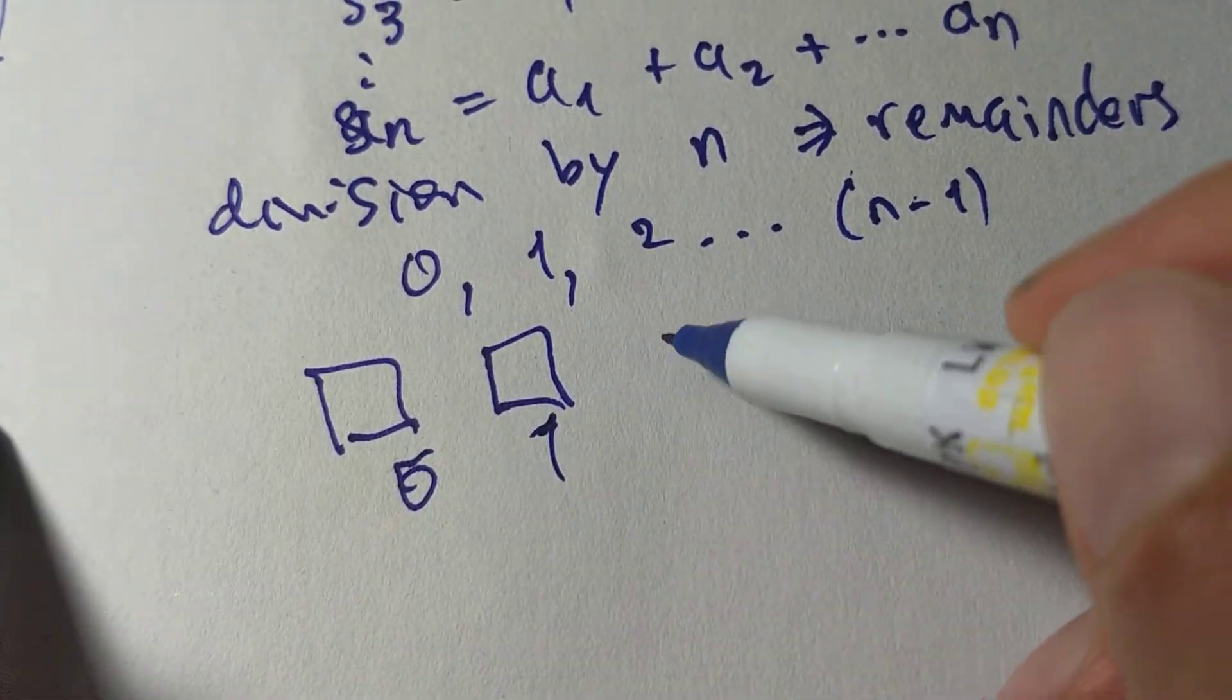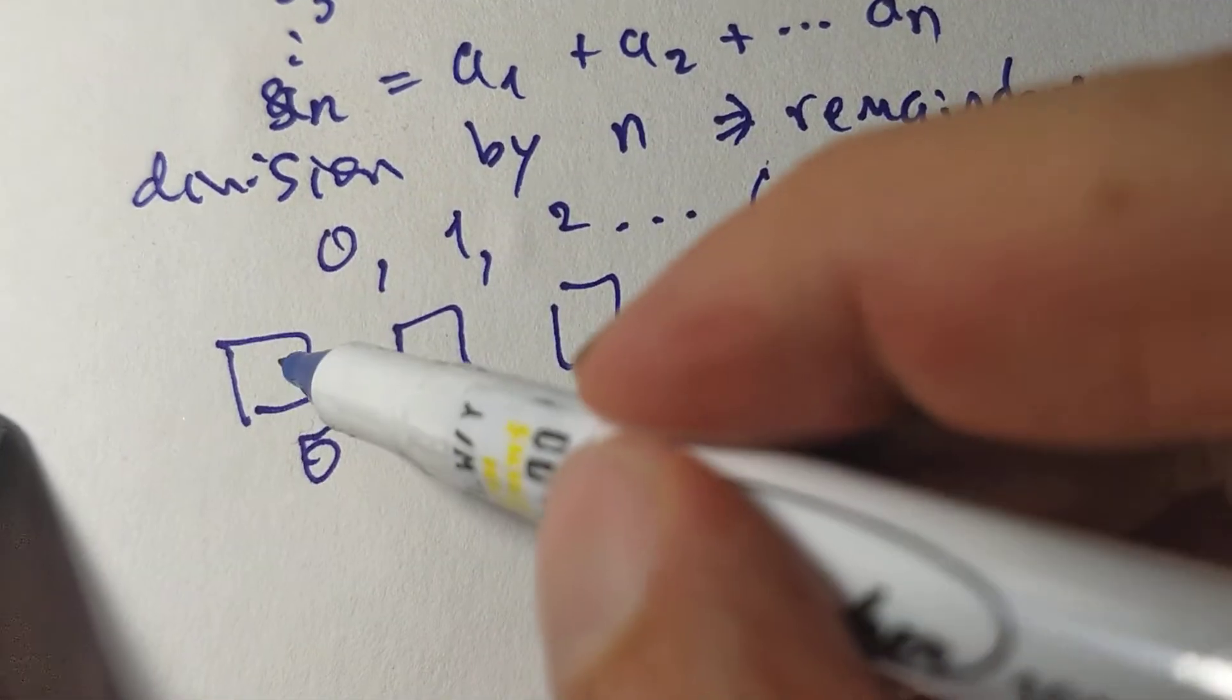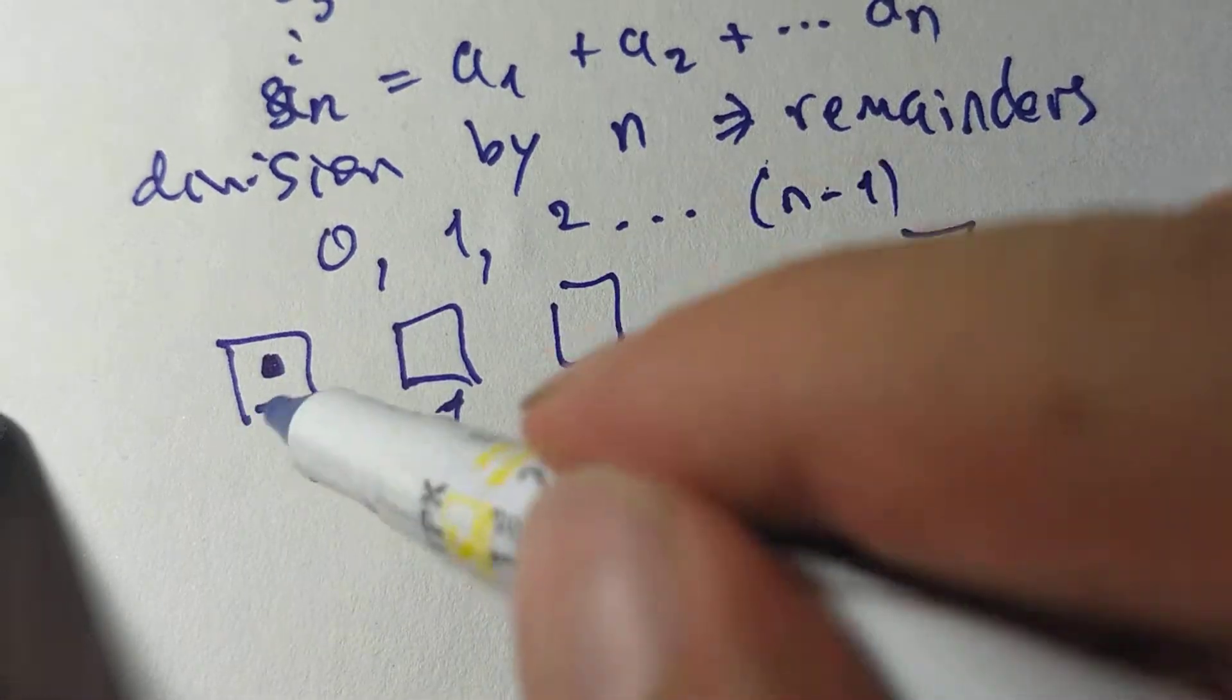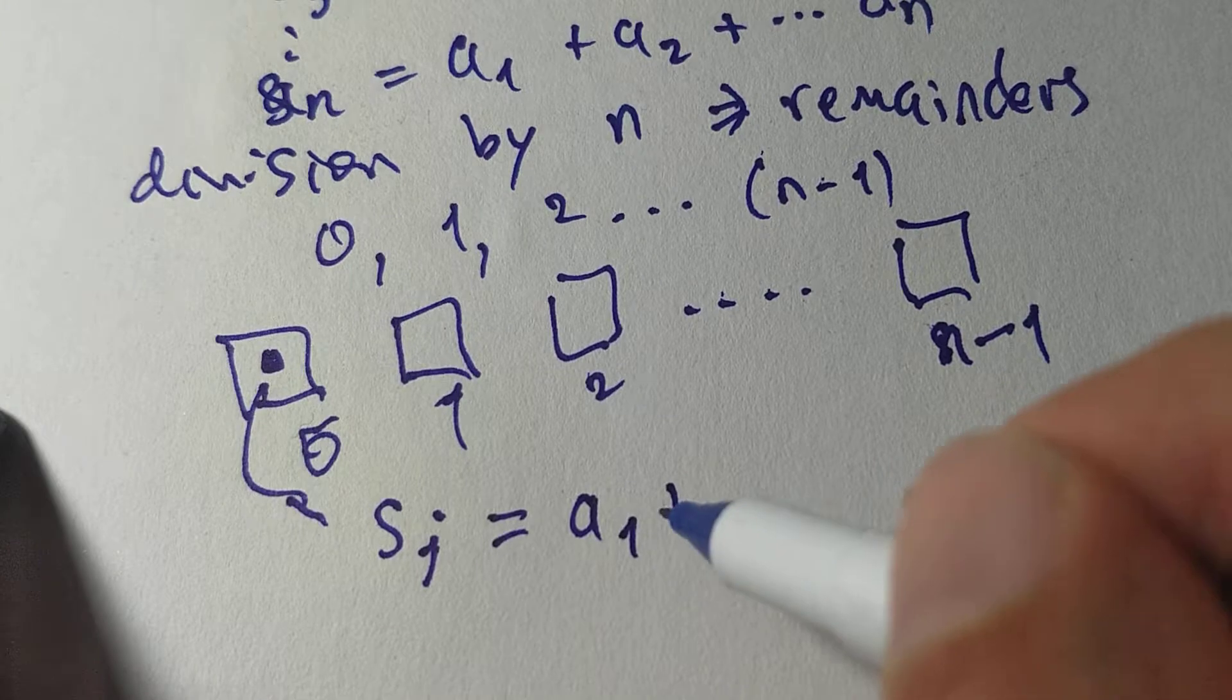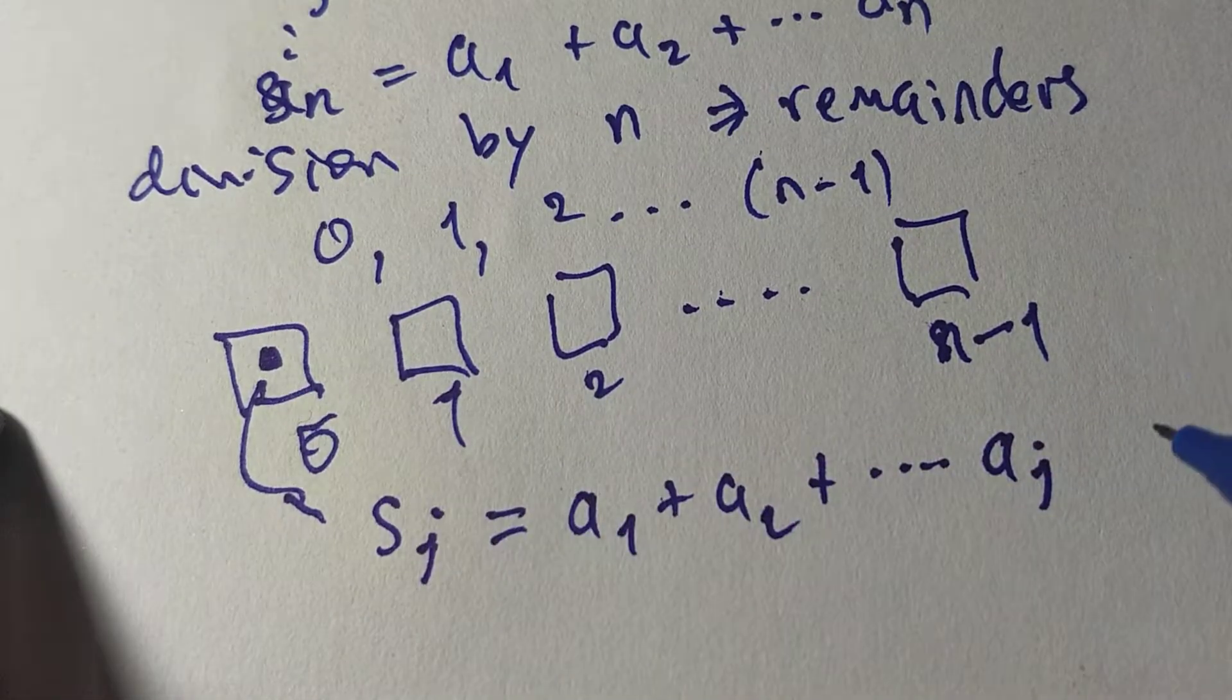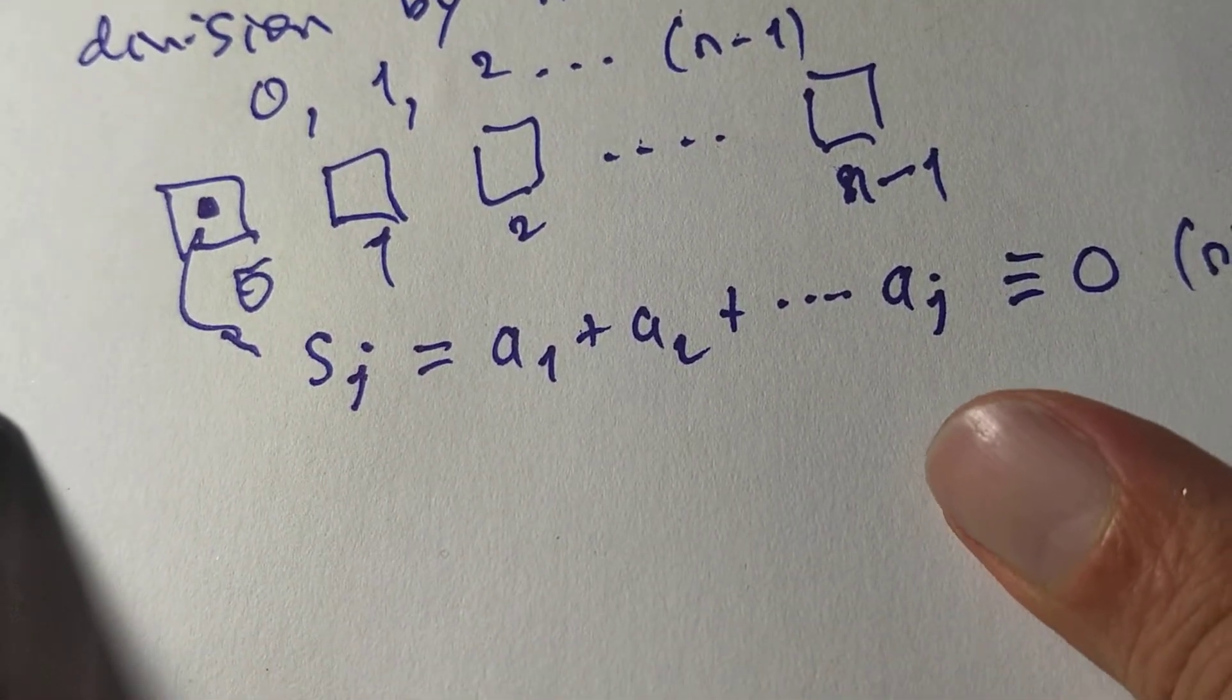0, 1, 2, all the way to remainder N minus 1. Now, if I have an element in here, then I'm finished. Okay, if I have an S in here, then this S, let's call it SJ. This is A1 plus A2 plus all the way up to AJ, and this is congruent to 0 mod N, and if that's the case, then we're finished. So, this is case 1.